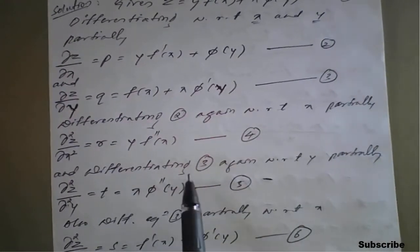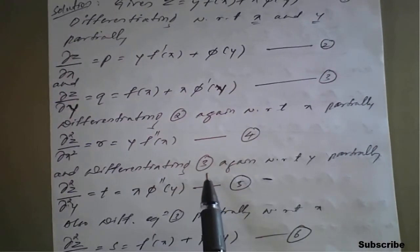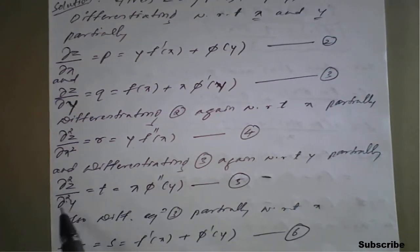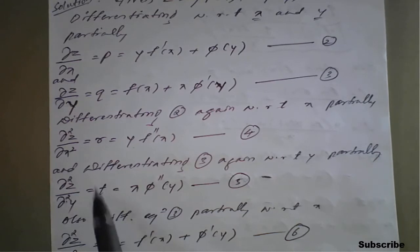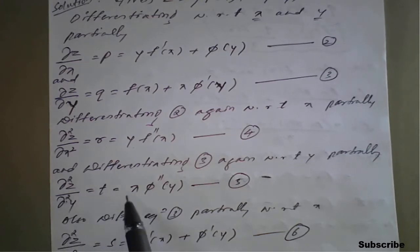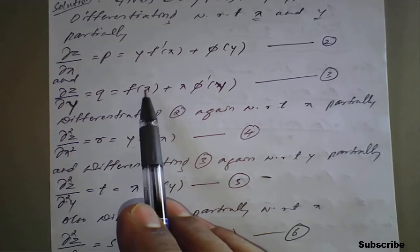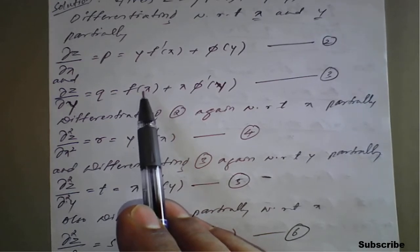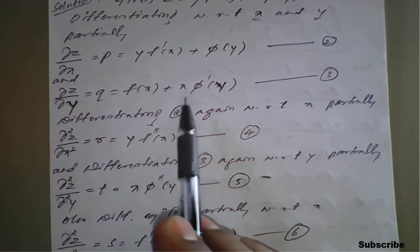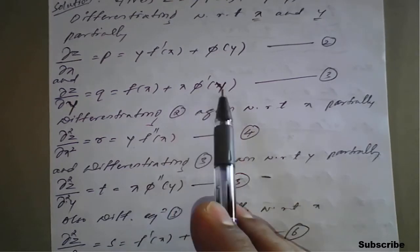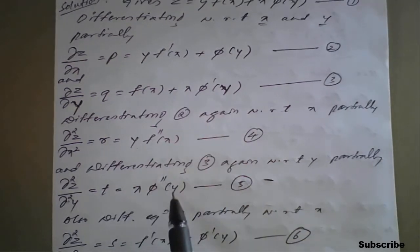Similarly, differentiating equation number 3 with respect to y partially, we get dou square z upon dou y square, symbolically called t. Here f of x with respect to y is constant, so it is 0. We get x into phi double dash of y — equation 5.